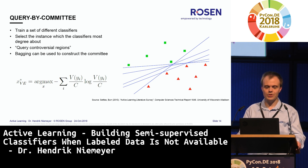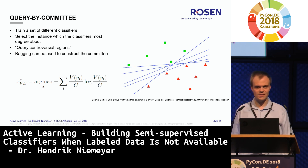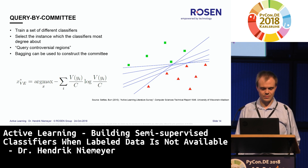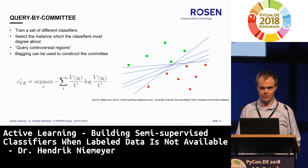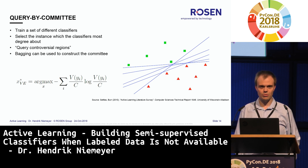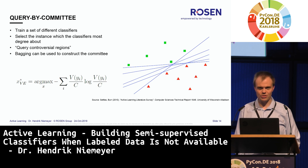Another technique related to uncertainty sampling is query by committee. There you train a set of classifiers — an ensemble — on your data instead of just one, and select the instance where the classifiers most disagree. You can use standard ensemble techniques like bagging to construct this ensemble. The selection criterion is a voting entropy rather than a probability entropy, making it highly related to uncertainty sampling, with essentially the same advantages and disadvantages.